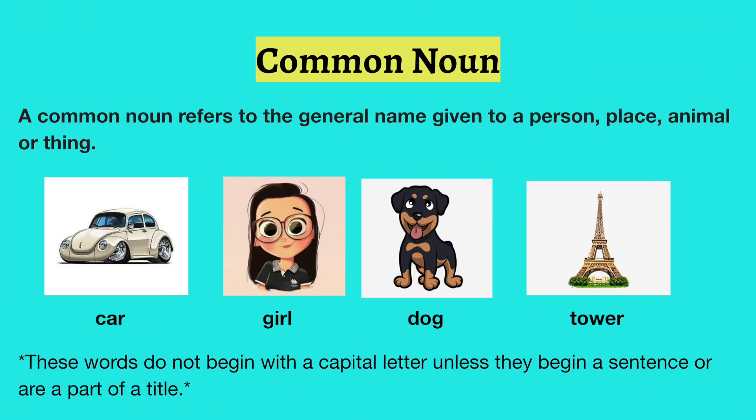Looking into the details of a common noun — a common noun refers to the general name given to a person, place, animal, or thing. It can be anything and refers to things only in general. Examples: a car, a girl, a dog, and a tower. Common nouns do not begin with capital letters unless they begin a sentence or are part of a title.